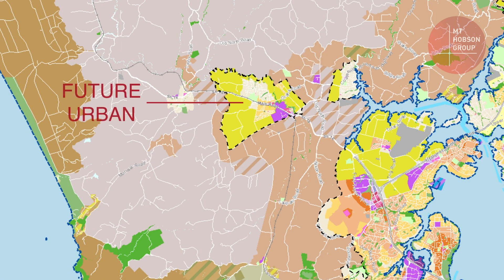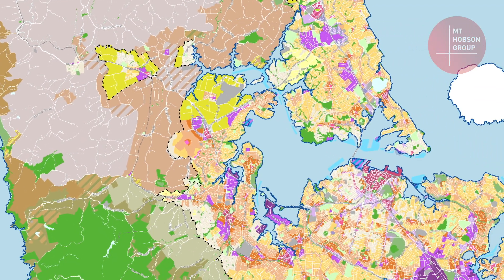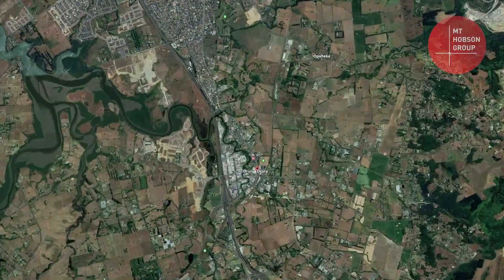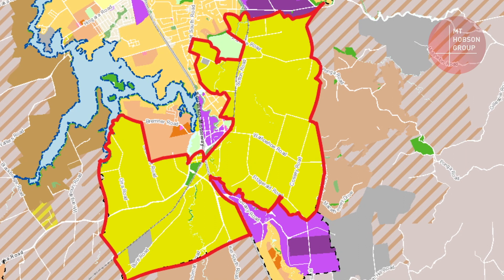The Future Urban Zone is coloured bright yellow on the planning maps and is usually located on the outside of existing residential areas. These areas will see the conversion of mainly rural land to residential, rolled out in a timed manner over the next 20 to 30 years. Drury is an example where a whole new town is proposed, which will be bigger than Napier once completed. Land in this area needs infrastructure and a plan change before it can proceed.